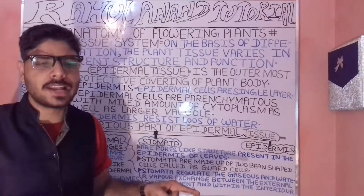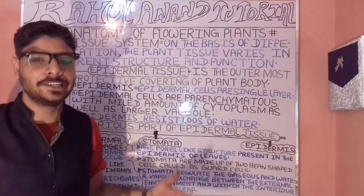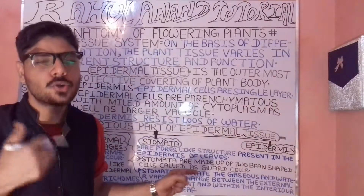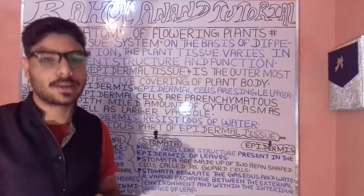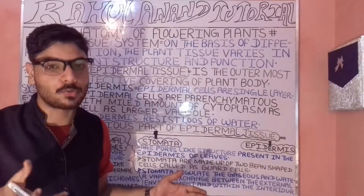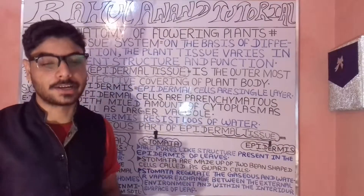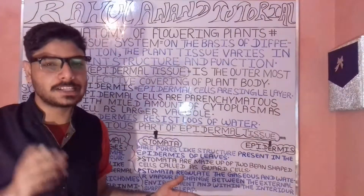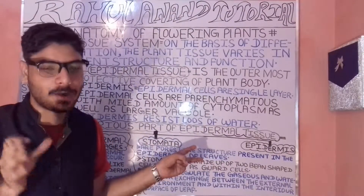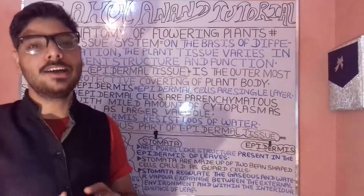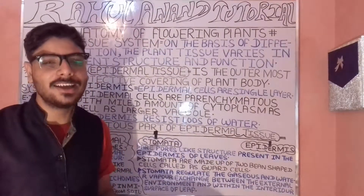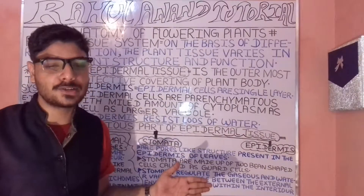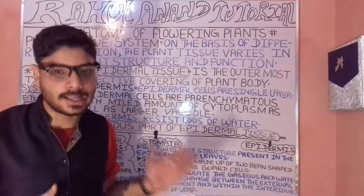When we talk about the epidermis, it plays an important role in resisting water loss. The cytoplasm has vacuole-like projection structures in the epidermis. The epidermis and epidermal cells are the various parts of the epidermal tissue.